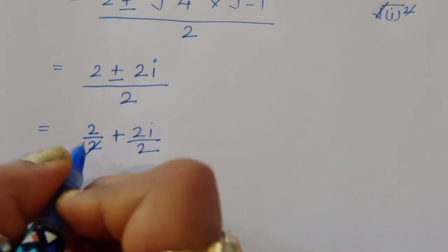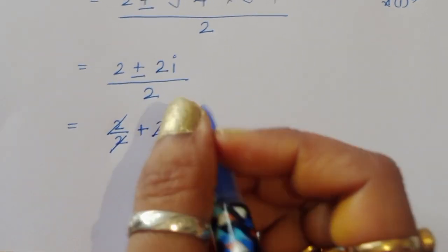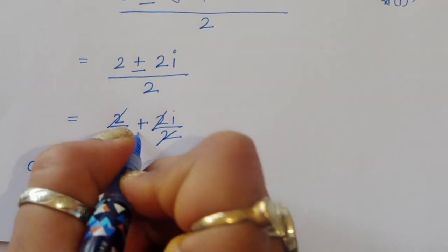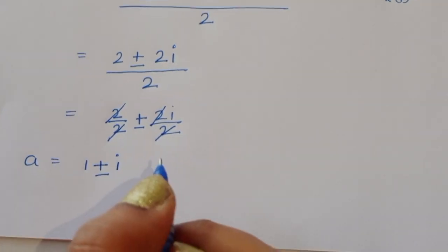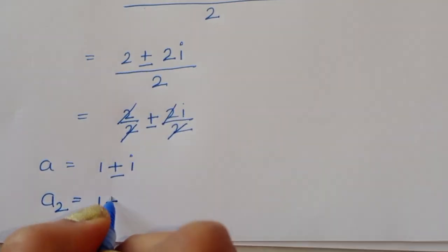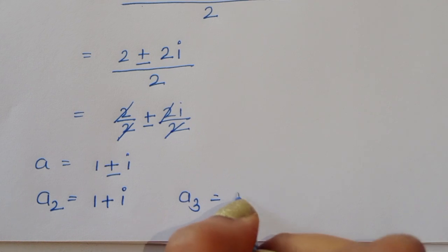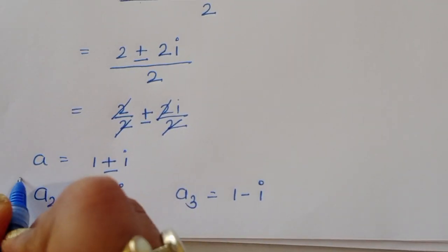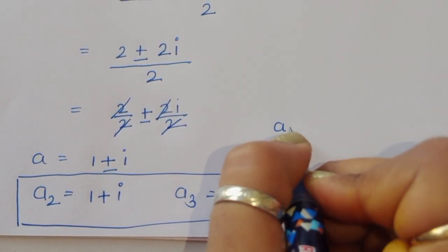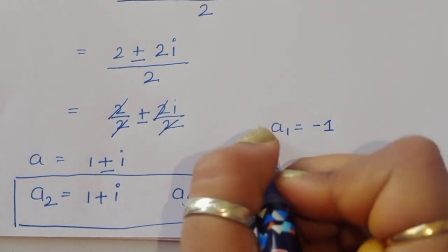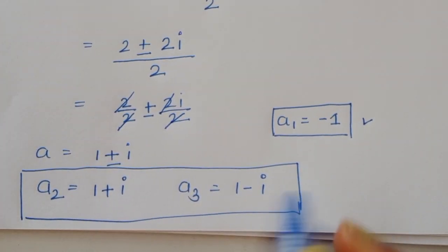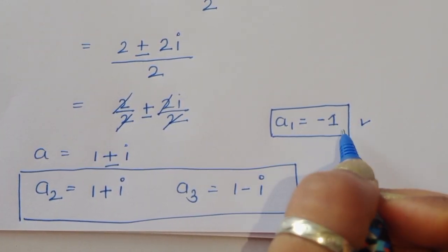So we get 2 plus or minus 2i divided by 2, which simplifies to 1 plus or minus i. Therefore a₂ = 1 + i and a₃ = 1 − i. These are complex roots. So we have three solutions: a₁ = −1, a₂ = 1 + i, and a₃ = 1 − i.